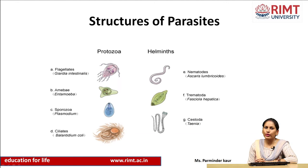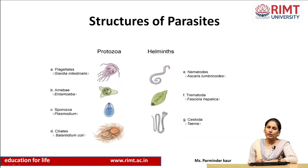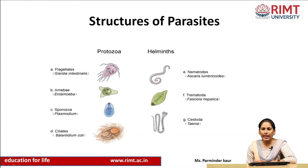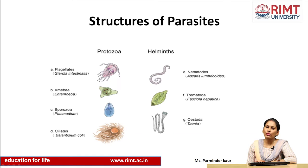Looking at the structures of protozoa and helminths in the pictures: flagellates — the example is Giardia intestinalis, which lives in the intestine and you can see the flagella on its structure. Amoebae have a free structure, can move anywhere and change shape — Entamoeba histolytica is the example. Sporozoa — the example is Plasmodium. Ciliates — example is Balantidium coli. For helminths: nematodes — example is Ascaris lumbricoides, also known as earthworm. Trematodes — example is Fasciola hepatica, a leaf-like structure. Cestodes — examples are Taenia solium and Taenia saginata, known as pork tapeworm and beef tapeworm.